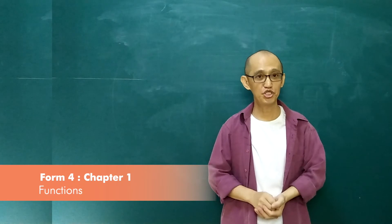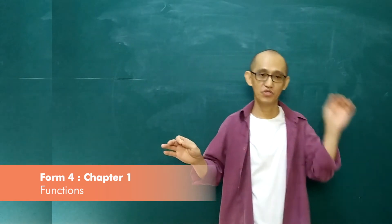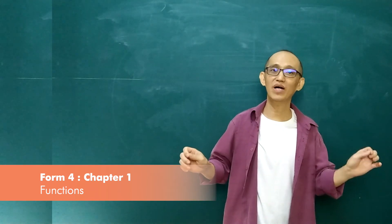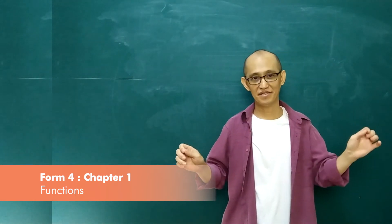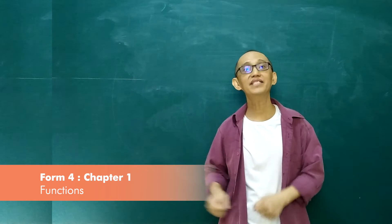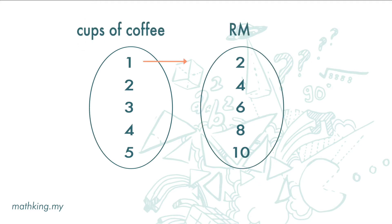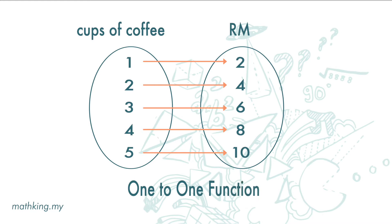A function is a relationship where one element in one set is mapped to one and only one element in another set. Take the example of the number of cups of coffee you get and the amount you pay. Here one element in the first set is mapped to one and only one element in the second set. In this case it is a one-to-one function.